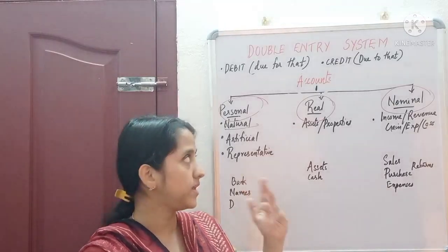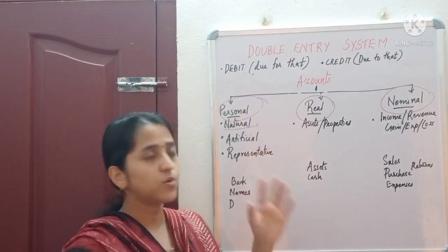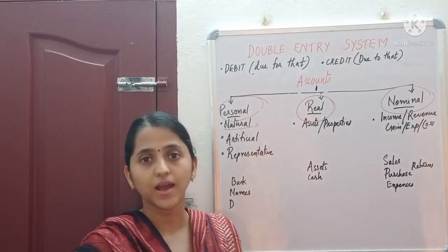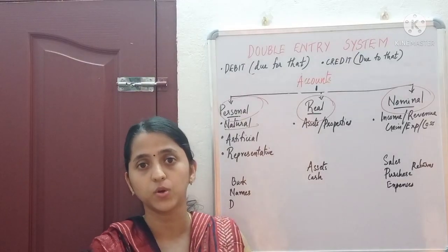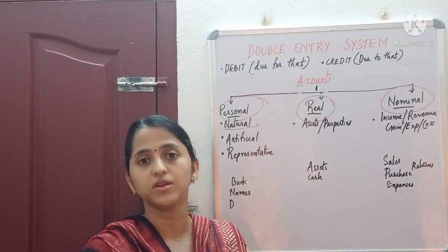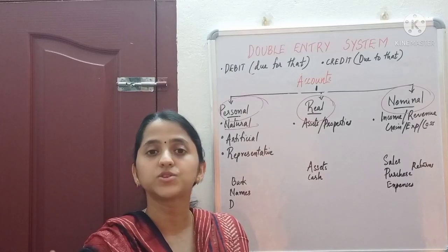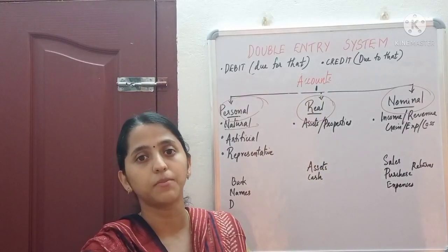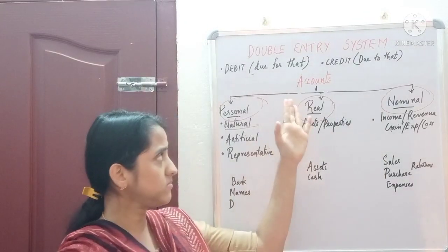Each transaction has two aspects: a debit aspect and a credit aspect, or receiving aspect and giving aspect. An account is a summary of business transactions during a particular time. For example, a purchase account means the summary of all purchases made in a year. Similarly, a cash account means the summary of all cash-related transactions made in a year.